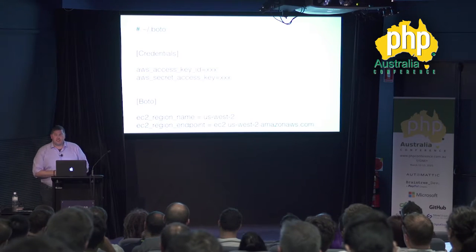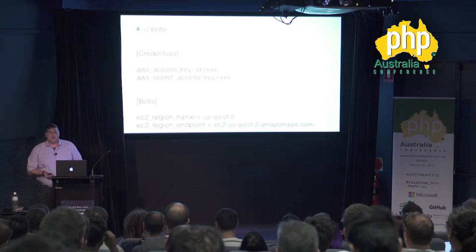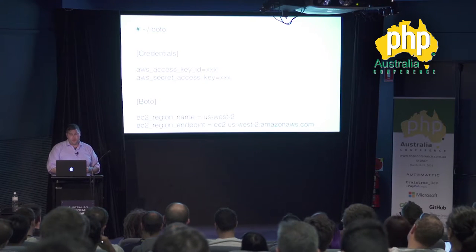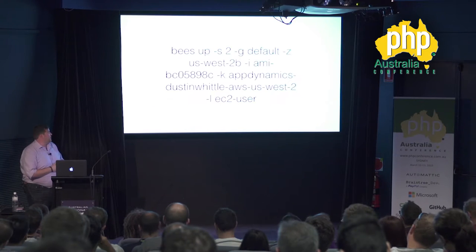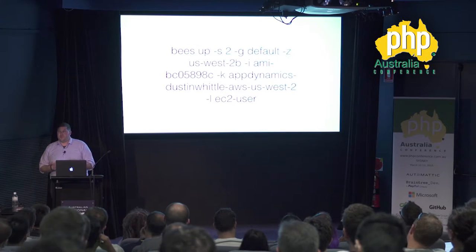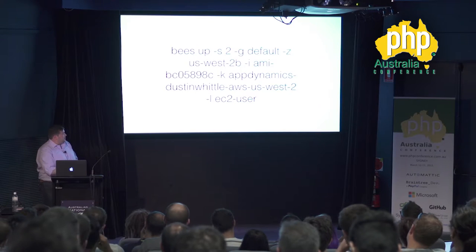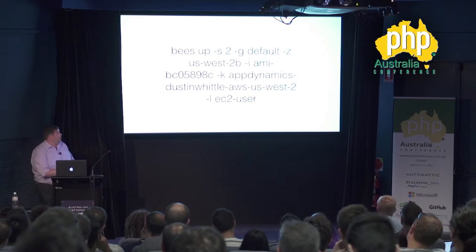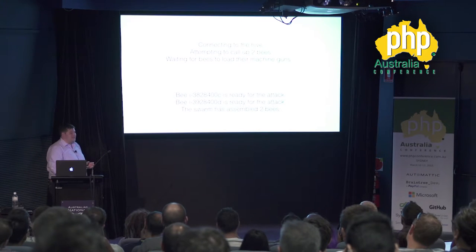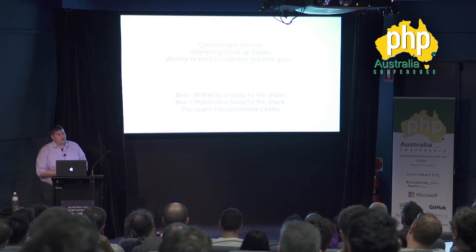Spin up many EC2 instances concurrently and have them all generate traffic for a URL endpoint. The 'bees up' command — with '-s 2' for two servers, specifying the security group, AMI, SSH key, and SSH user — spins up instances. The output is amusing: it will 'connect to the hive', 'attempt to call up two bees', 'wait for bees to load their machine guns', and notify you that 'the swarm has assembled'.